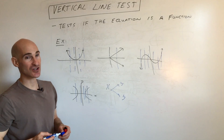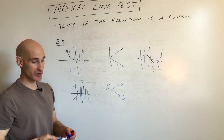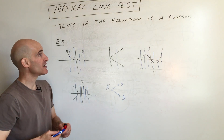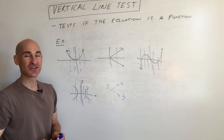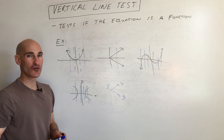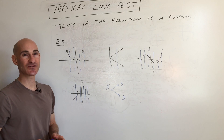If it fails the vertical line test, it's not a function. If it passes — meaning it only crosses once or less — then it is a function. So this has been an overview of the vertical line test. I'll see you in the next video.